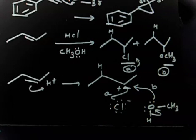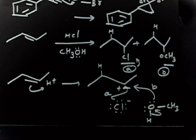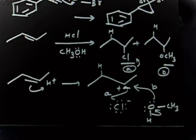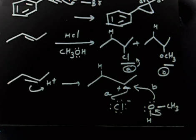The electrophile is the same in both cases, but the nucleophile is changing because the solvent can also attack along with Cl⁻ — that is why we get two products. If the problem simply gives HCl without mentioning the solvent, then you only add H⁺ and Cl⁻. But if the solvent is mentioned, you must consider whether the solvent can also attack. For example, CCl4 cannot attack, but water or methanol can — so always consider the solvent.